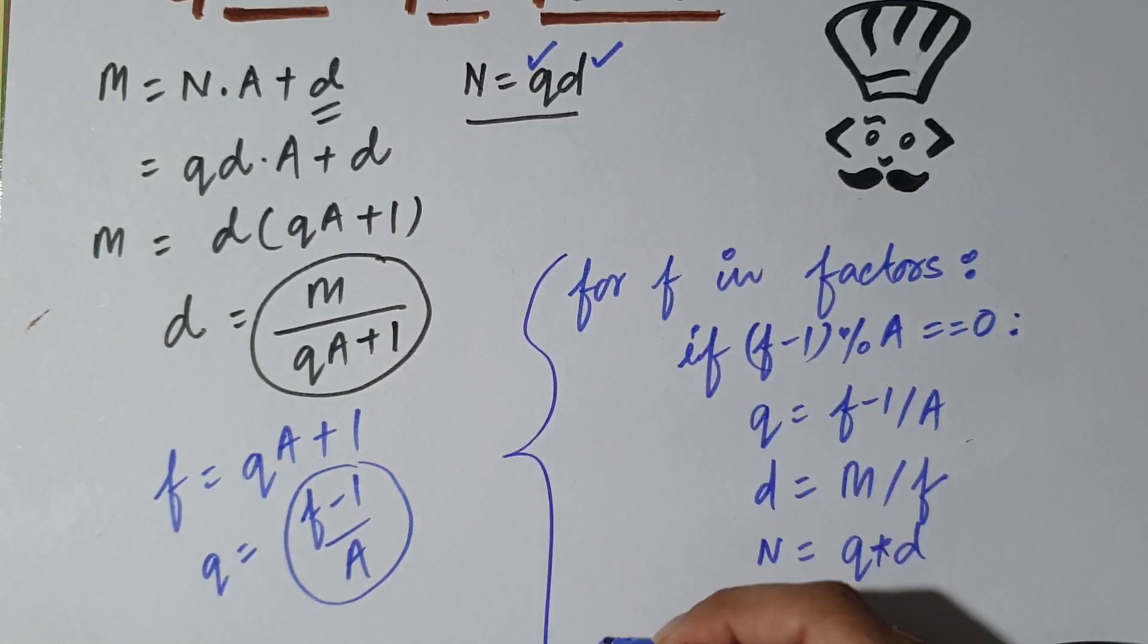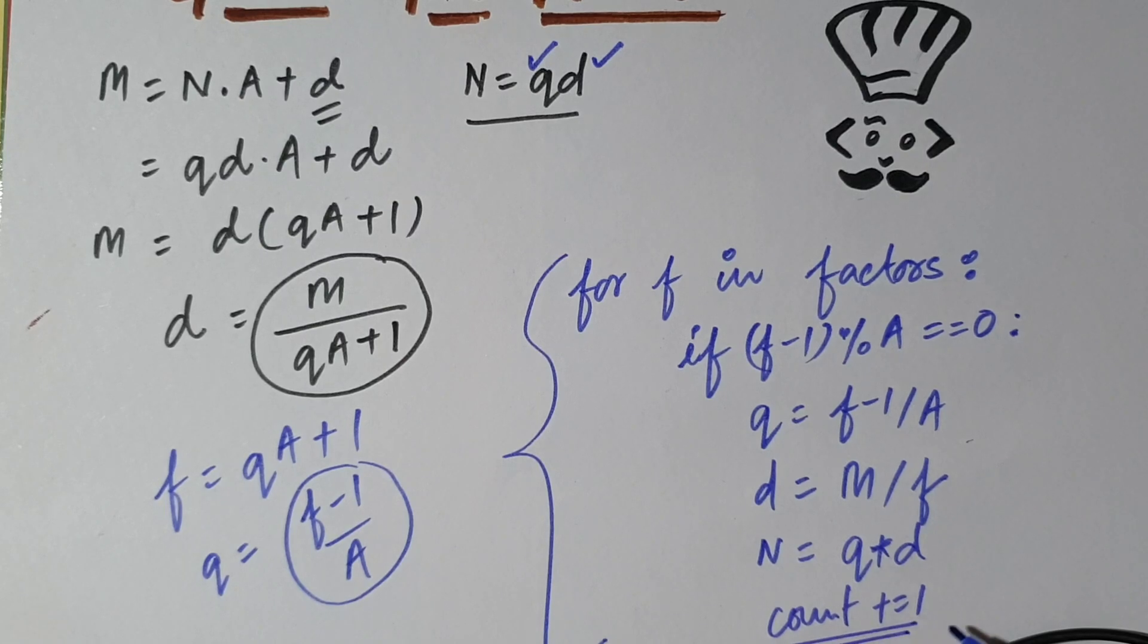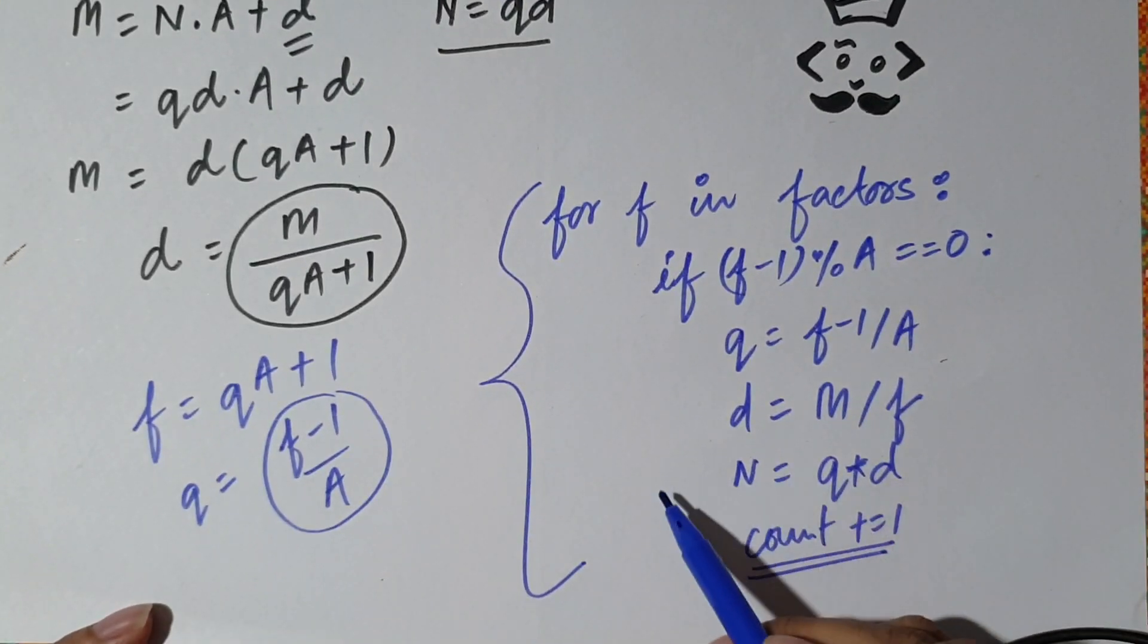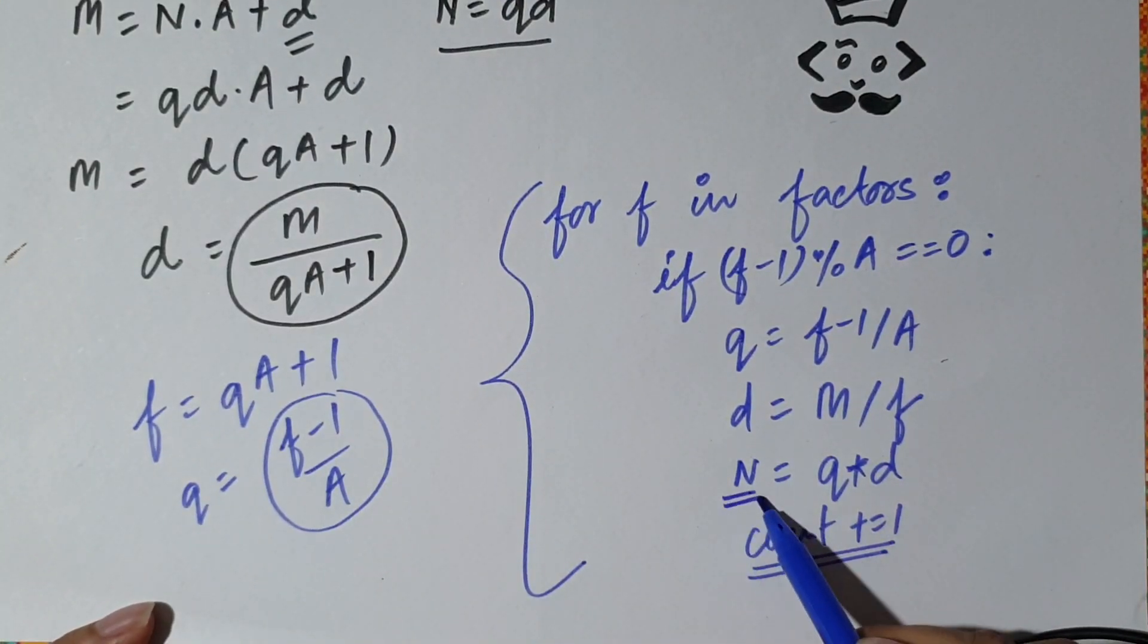Now we'll get all such N's. We store all such N's in some list and we also increment a count. Because finally, we want to output a number as well as all the values of N. So we store all the values of N in a list and we also keep on incrementing the count.